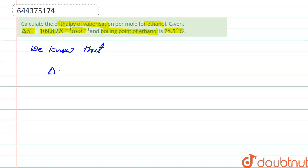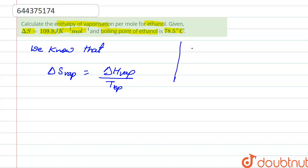We know that the change in entropy, delta S of vaporization, is equal to the enthalpy of vaporization, delta H of vaporization, divided by the temperature of the boiling point.